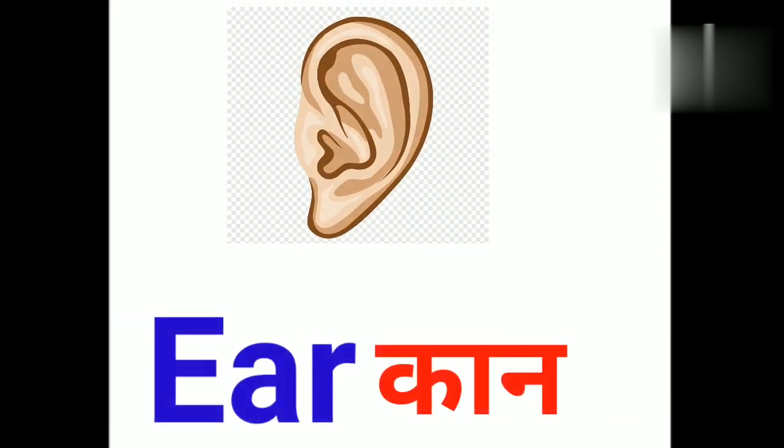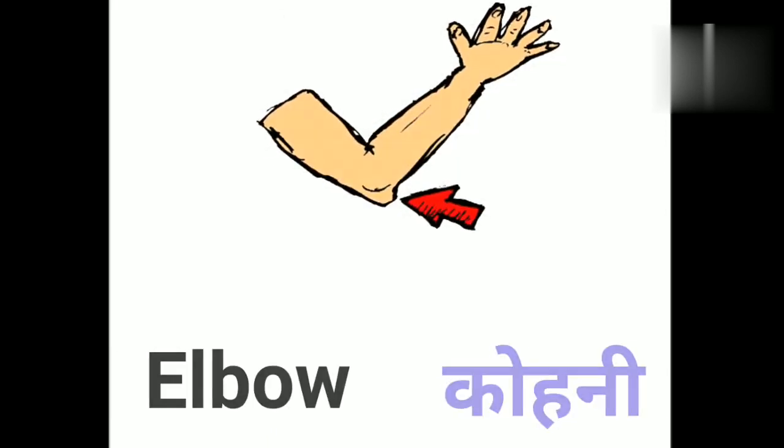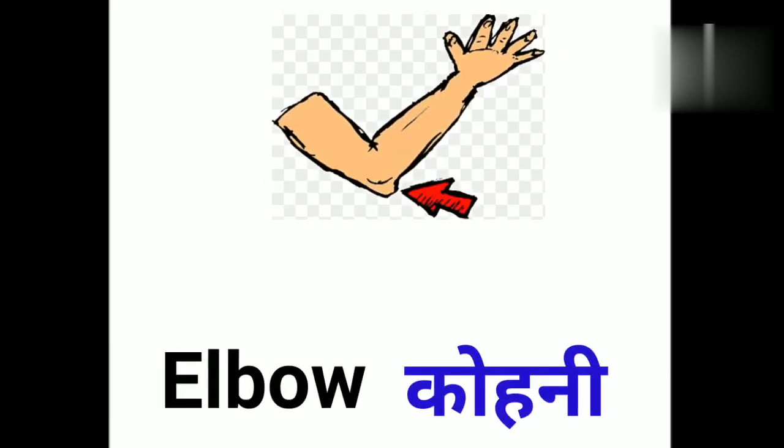These are ears. Ear means kaan. This is elbow. Elbow means kooni.